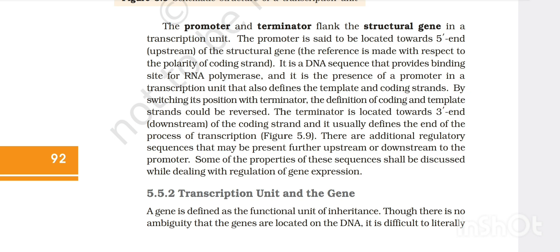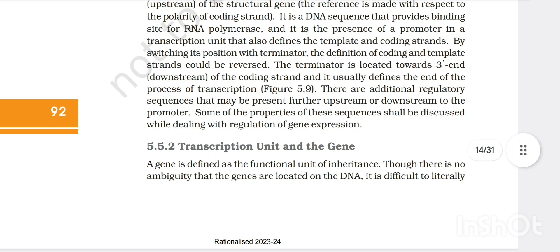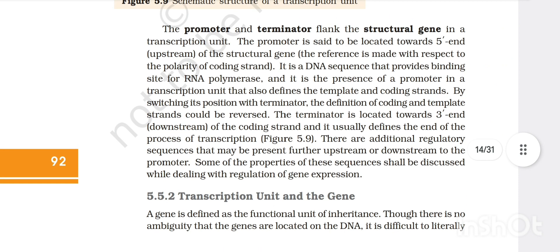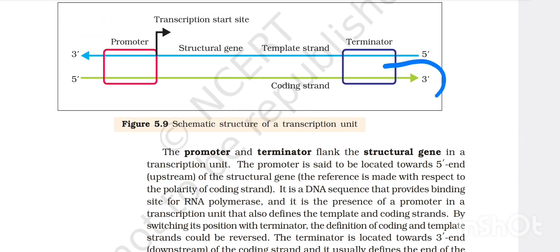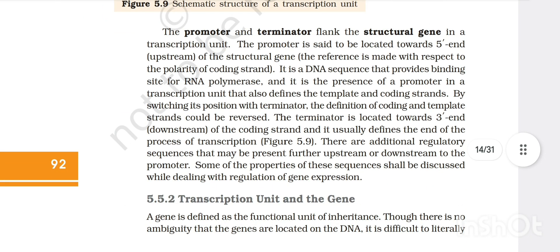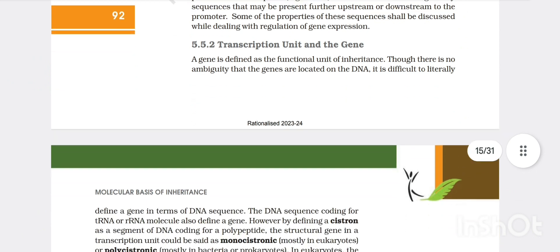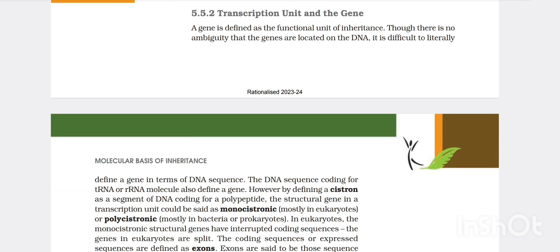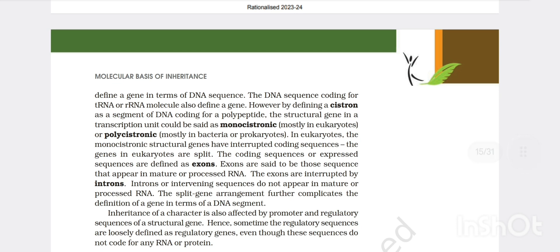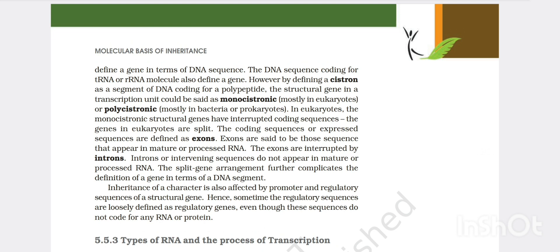It is the DNA sequence that provides binding site for RNA polymerase. The terminator is located towards the 3' end of the coding strand, so it is downstream. Then the transcription unit and the gene - a gene is defined as the functional unit of inheritance. Though there is no ambiguity that genes are located on DNA, it is difficult to literally define a gene in terms of DNA sequence. The DNA sequence coding for tRNA or rRNA molecule also defines a gene.